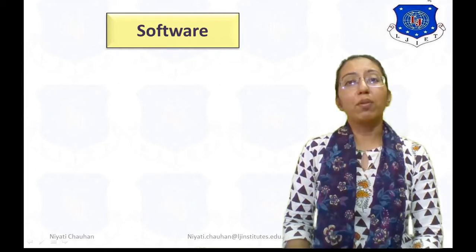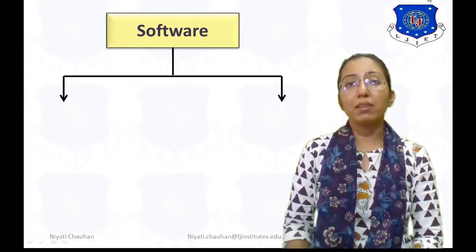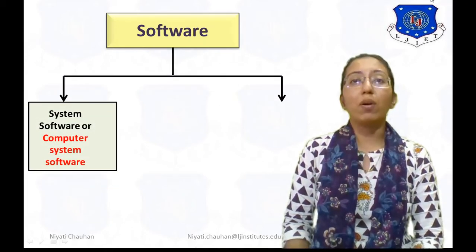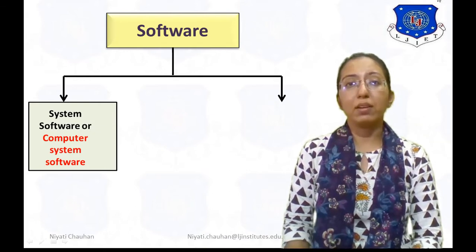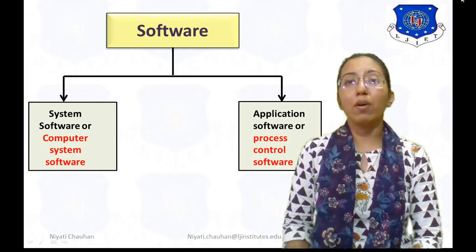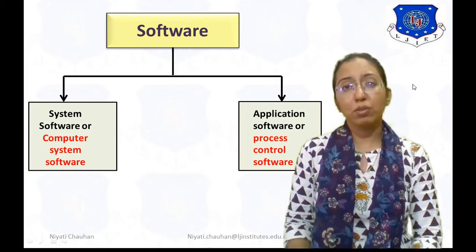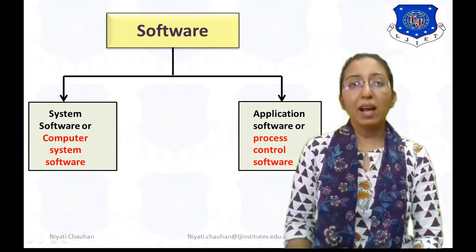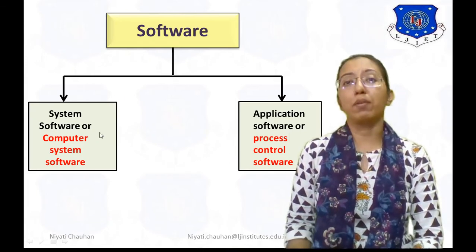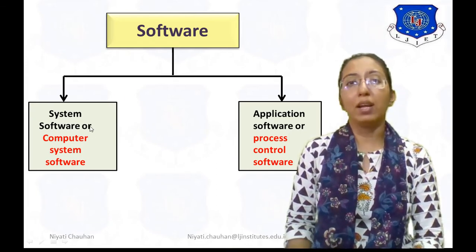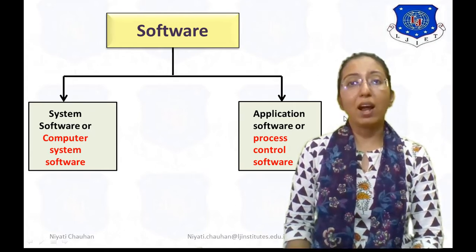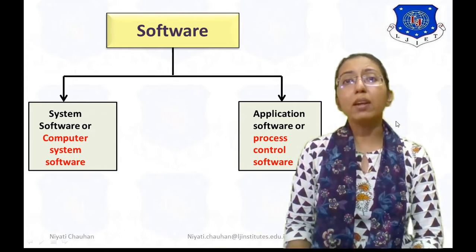We know that software is divided into parts. Number 1: System Software, and another part is Application Software or Process Control Software. In the last lecture, I completed the topic of System Software. And in today's session, I start the Application Software topic.